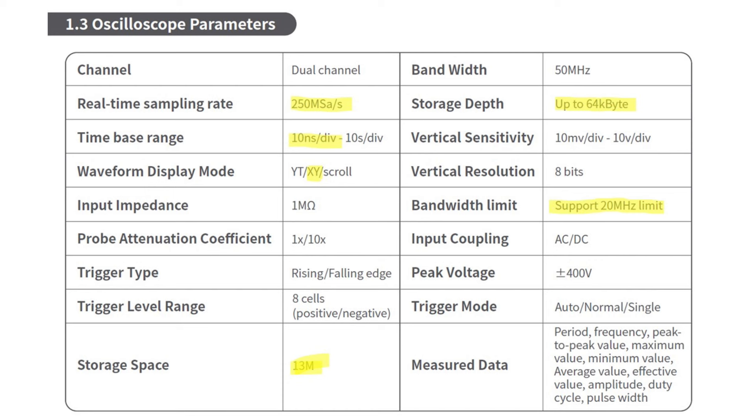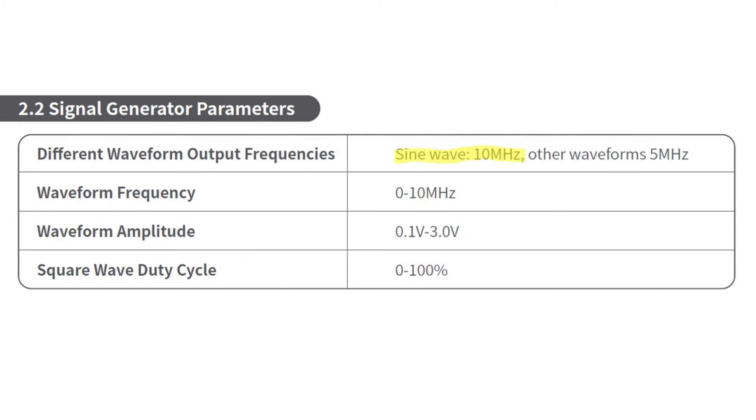It's got a switchable bandwidth limit down to 20 megahertz, that's nice. 50 megahertz analog bandwidth of course. One thing I noticed it doesn't state is about the mathematical functions or FFT, so it's got a few interesting functions we can test in the next video.